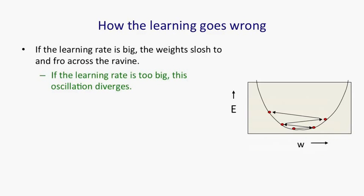So the way the learning goes wrong if you use a big learning rate is that you slosh to and fro in the directions in which the error surface is very curved. So we'll call that sloshing across a ravine, and with the learning rate too big, you'll actually diverge.